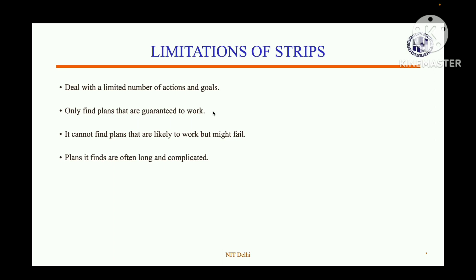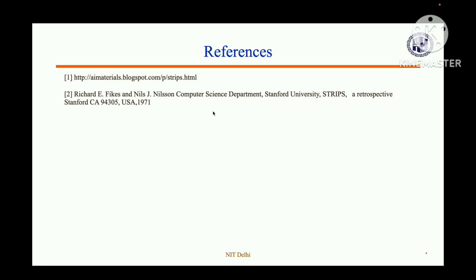Limitations of STRIPS: first, it has a limited number of actions and goals. Second, it only finds plans guaranteed to work — it already knows what to achieve. It cannot find plans that are merely likely to work but might fail. The plans it finds are often long and complicated. These are the references for this topic. Thank you.